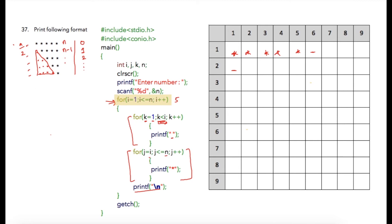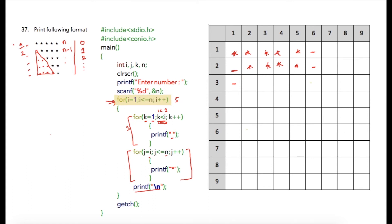In the next iteration i becomes 2. The k loop initializes to 1 and the condition 1 less than 2 is true, so it executes once, printing one blank space. Then the star loop prints 4 stars and a newline moves the cursor to the next line. When i becomes 3, the space loop prints 2 spaces and the star loop prints 3 stars.